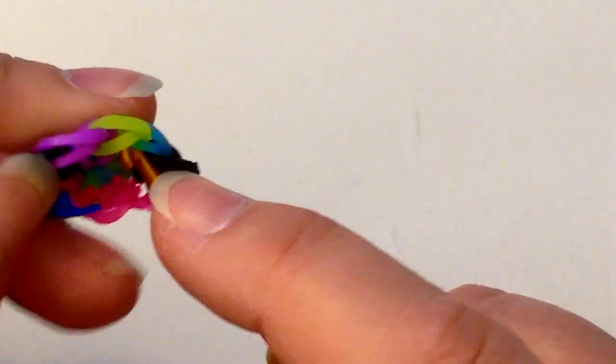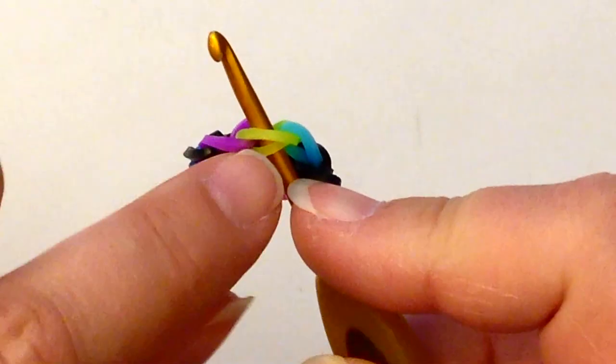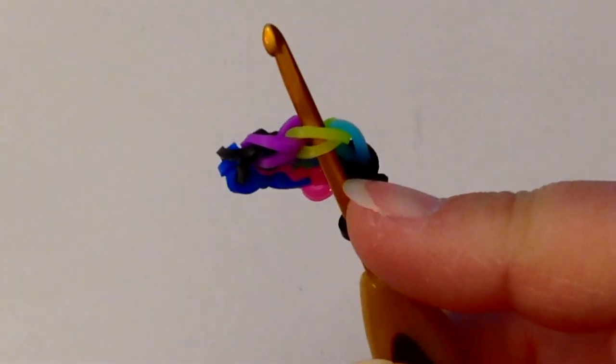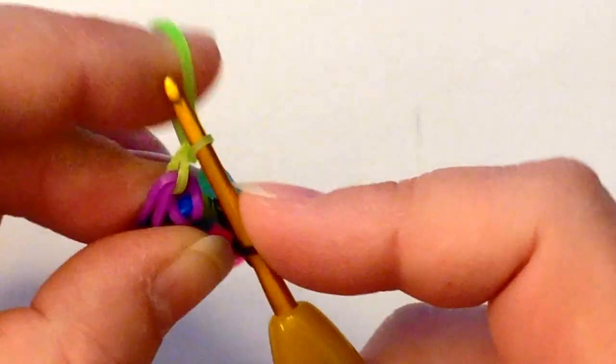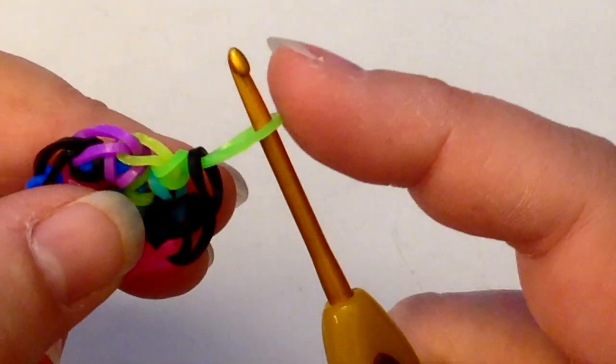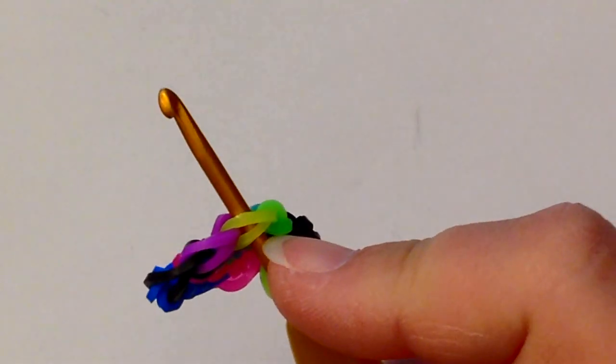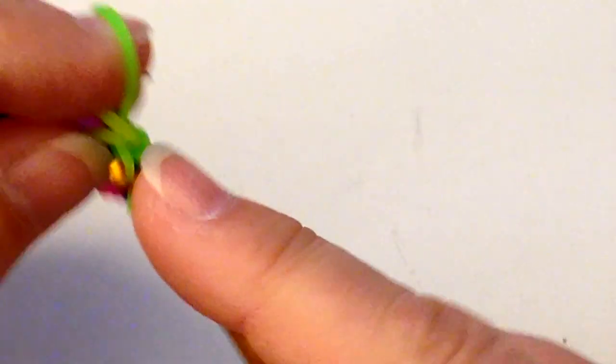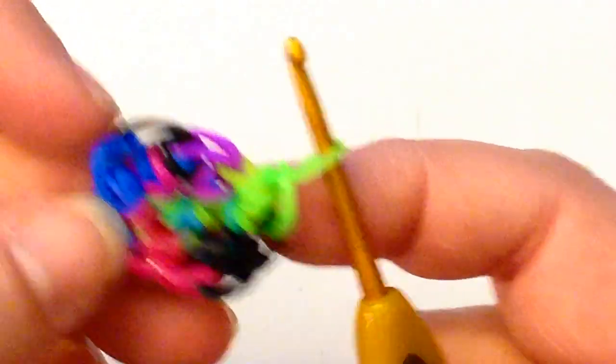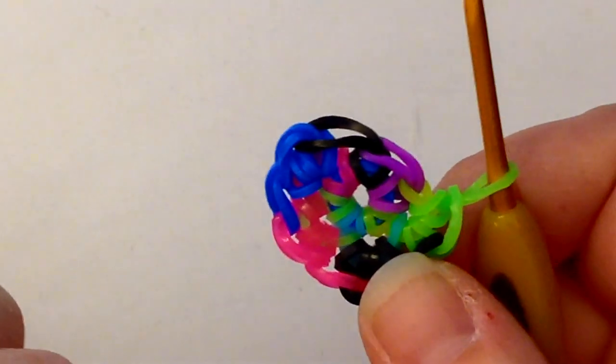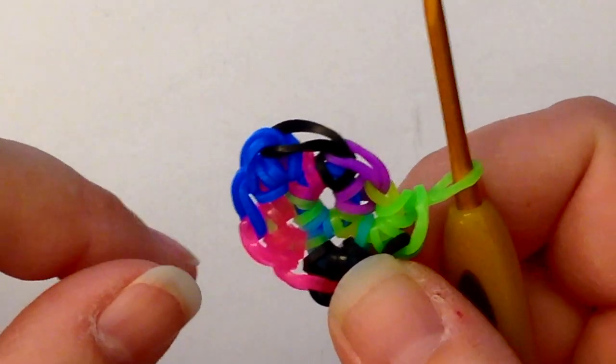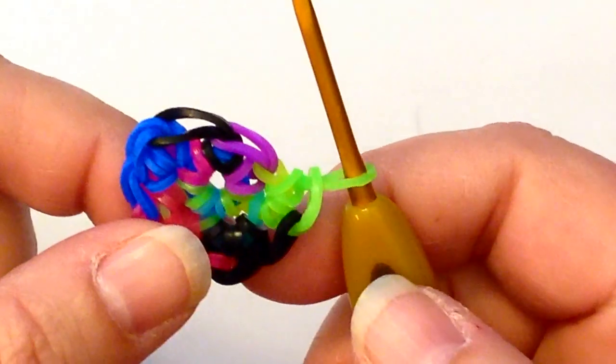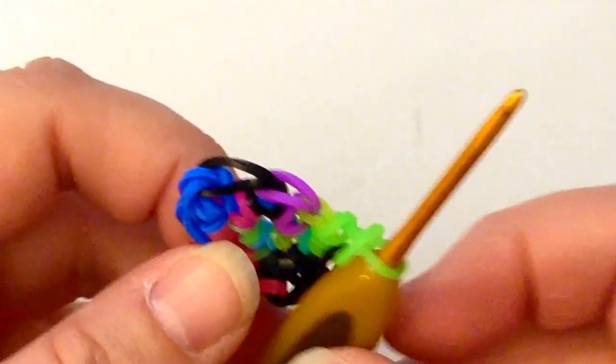So in the yellow, if we're doing two single crochets for an increase, go in, take your first stitch like that, single crochet, and then go back in the yellow and do your second single crochet. So that's how we do the magic ring. I hope that helps, Courtney. I really do look forward to seeing you do some of these. Take care, bye bye!